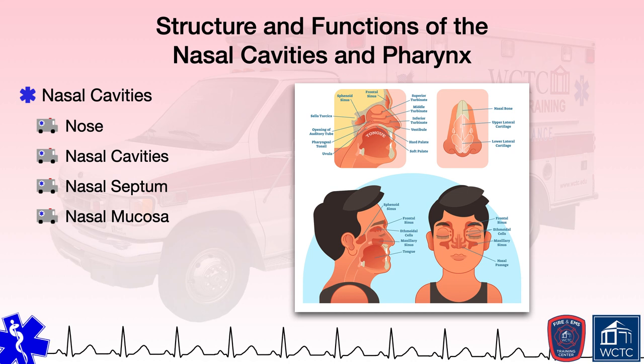There are a set of bony protrusions in the nasal cavity called turbinates that extend from the lateral walls of the nasal cavity into the passageway, increasing the surface area of the nasal mucosa. These turbinates create airflow turbulence that aids in humidifying the inhaled air while also increasing the likelihood that airborne particulates are captured by the nasal mucosa.